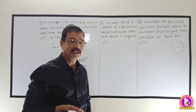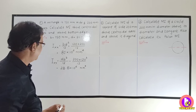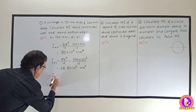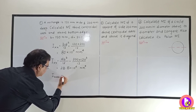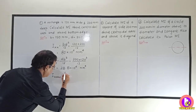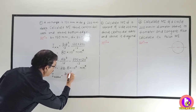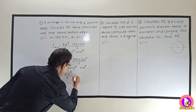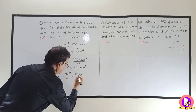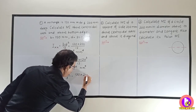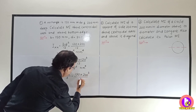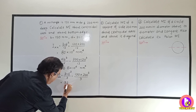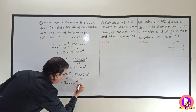We are also asked to find out the Moment of Inertia about the bottom edge, that is about the base. The standard formula for Moment of Inertia of a rectangle about the base, derived using the parallel axis theorem, is B into D cube divided by 3. Substituting B = 120 and D = 200, it comes out to be 320 × 10⁶ mm⁴.